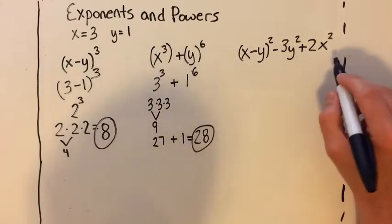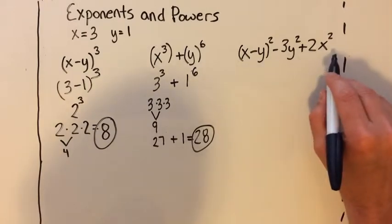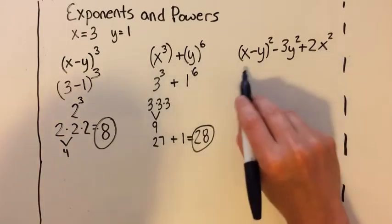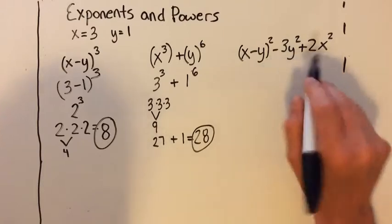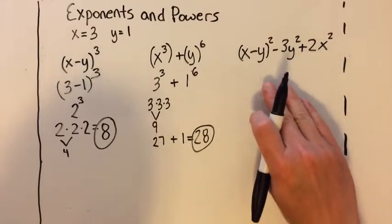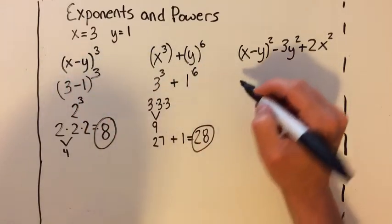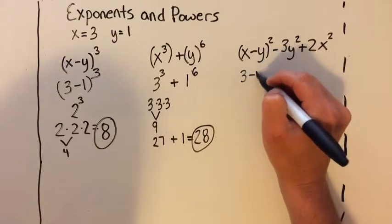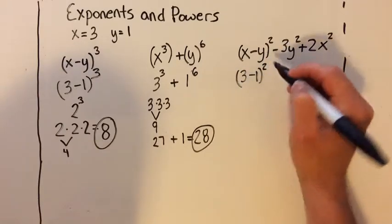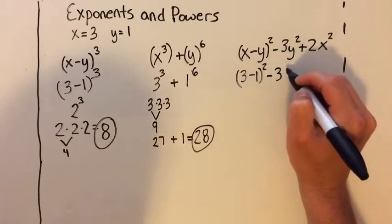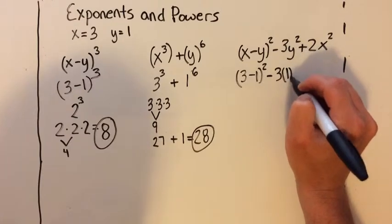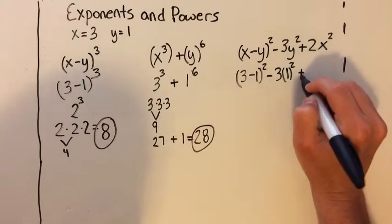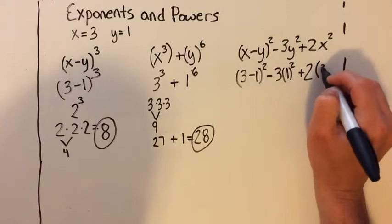And we have this long expression—this is a polynomial here, so it's got multiple variables of x and y. We're going to do the same thing. We're going to substitute in our x's and our y's. So we get 3 minus 1 squared, minus 3 times 1 squared, plus 2 times 3 squared. That's 2 times 3 times 1.